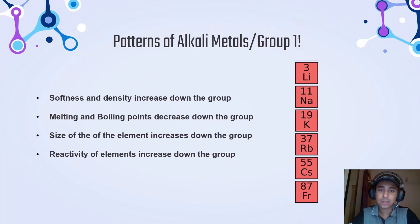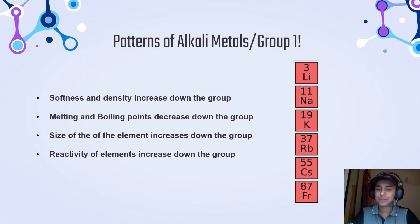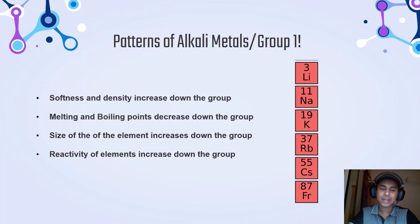Now let us look at some of the patterns of alkali metals, or the elements in group 1. As you can see on the right side of the screen, these are the elements we have in group 1. As we go down the group, they follow a specific pattern. For example, softness and density increase down the group, while melting and boiling points decrease as we go down the group. Similarly, the size of the element increases as we go down the group. Likewise, the reactivity of elements also increases as we go down the group.